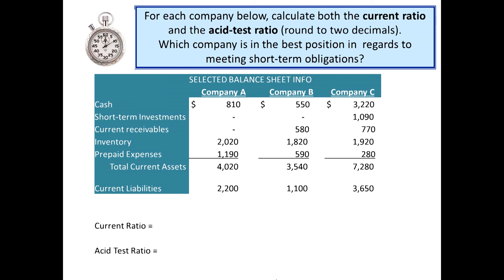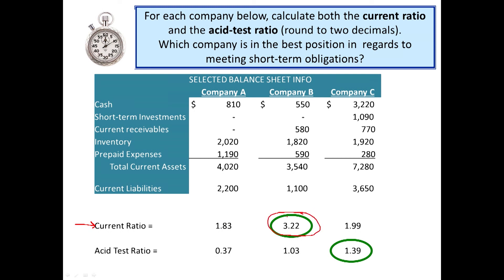Here's a quick example of how this might be beneficial. We have three fictitious companies and this information. The current ratio and the acid test ratio lead us to different conclusions. As far as current ratio, Company B has a healthier current ratio than A or C. However, a lot of their current assets are inventory and prepaid expenses, which are not nearly as liquid as cash. So if you look at the acid test ratio, Company C clearly has the superior ratio because they have a lot of their current assets in those liquid assets of cash, short-term investments, and receivables.